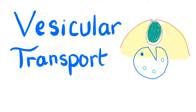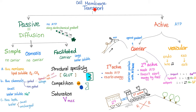Today's topic is vesicular transport — literally how your cell eats. There are two types of cell membrane transport: passive transport called diffusion, which doesn't require ATP, and active transport, which requires ATP. Active transport includes carrier active transport and vesicular active transport. Vesicular transport is an active transport that requires ATP, and it has two types: endocytosis, getting nutrients and substances into the cell, and exocytosis, getting substances out of the cell — 'exo' means exit.